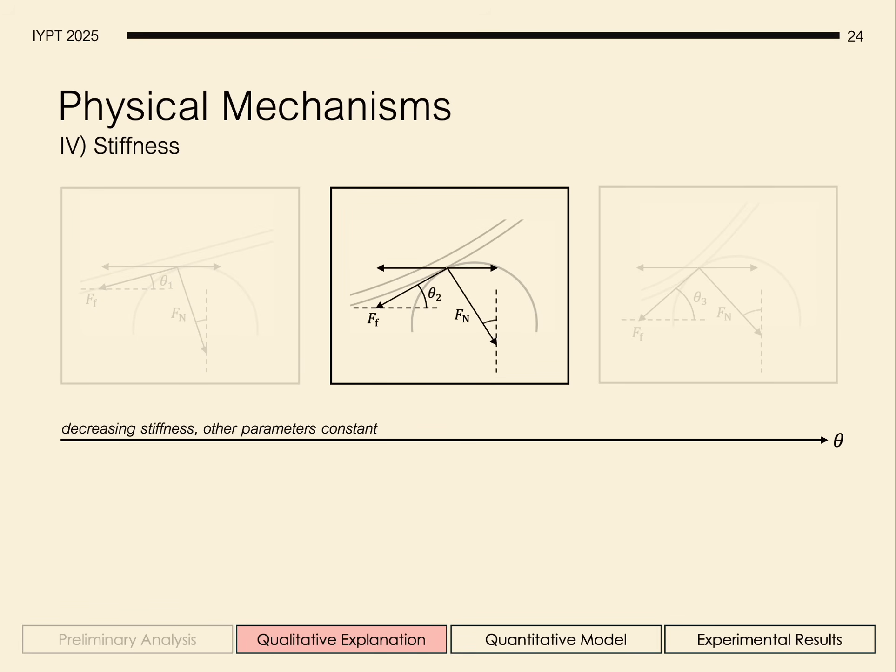Expectedly, when the rulers are less stiff, theta is greater. And finally, as the stiffness decreases again, theta is even larger.